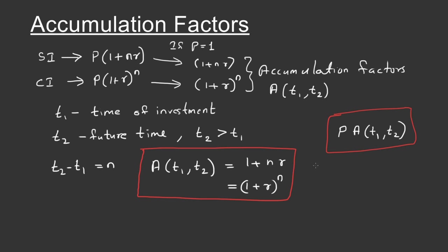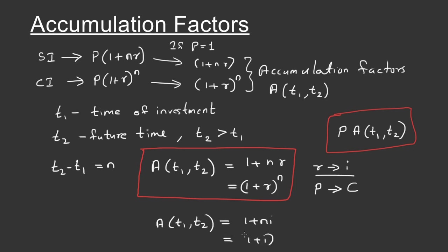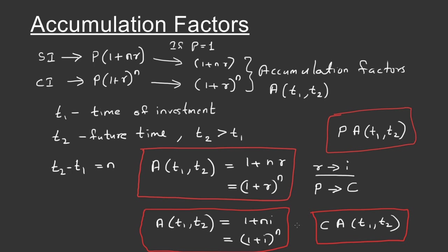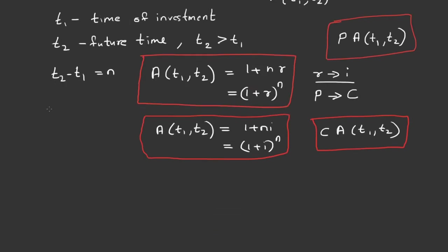In some books, r the rate of interest is denoted as i, and instead of principal P they use C. So in such cases, the equations become A(T1, T2) = (1 + ni) for simple interest or (1 + i)^n for compound interest, and the accumulated amount equation is C × A(T1, T2). So don't be confused — whether r or i is given, the equation form is the same. In other words, the accumulation factor is the proportion of the amount obtained at the end of period T2 to the amount invested.